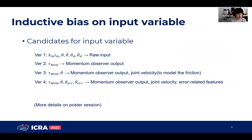For the inductive bias for input variable, there are four candidates for input variable. The proposed input is momentum-observer output, joint velocity, and encoder-like kinematic features. More details can be seen in the poster session.